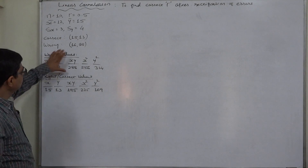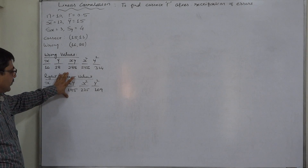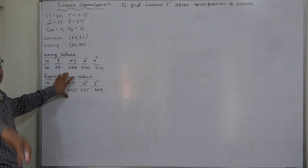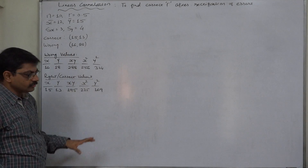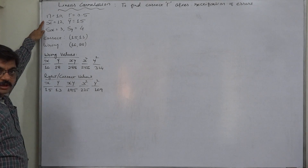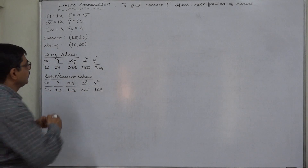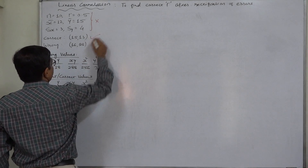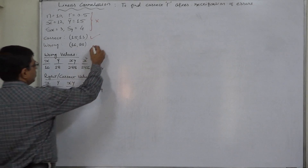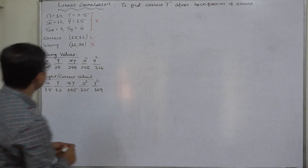We have to remove the effect of the wrong values of x and y and include the correct values. But we need the incorrect summations to subtract and add these values. In this case, we have not been given the incorrect summations — we have been given the means and standard deviations, which we now know are wrong. So first of all, we have to find out the incorrect summations.